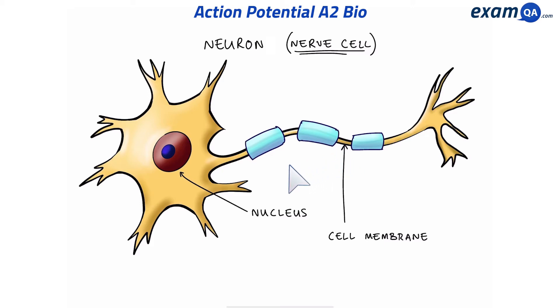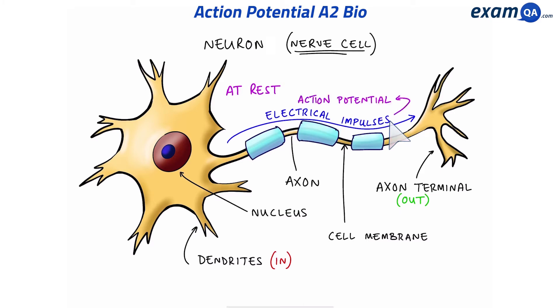However, on top of that, it also has these branches called dendrites. This is where information comes into a neuron, travels through the axon, and goes out of the neuron through the axon terminal. Now, the neuron can either be at rest, or it can be firing electrical impulses, also known as action potentials.